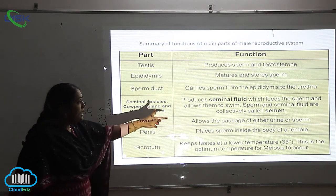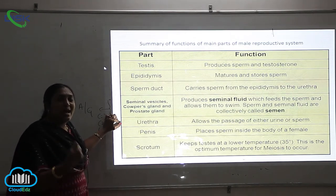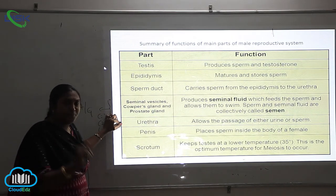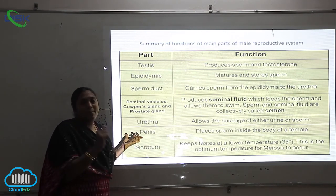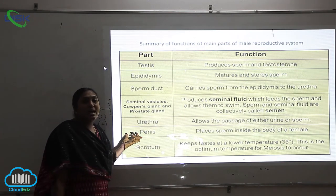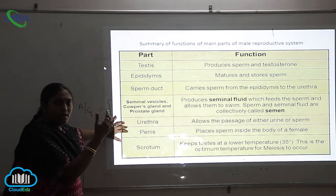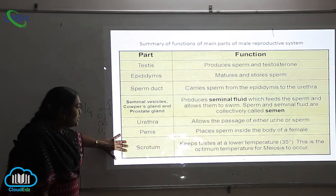The urethra is present inside the penis, which is the next part. Its function is it places the sperms inside the body of the female. This is the external genitalia of the male reproductive system, found not only in humans but also in other highly evolved mammals like monkeys, cheetahs, dogs, buffalos, and horses.